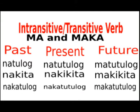Ma and Maka verb forms. A verb with a ma prefix indicates capability to do something. It is in the active form when it is used with an intransitive verb, and passive when it is attached to a transitive verb. The Maka verb form has the same meaning as ma, except that it is always active.